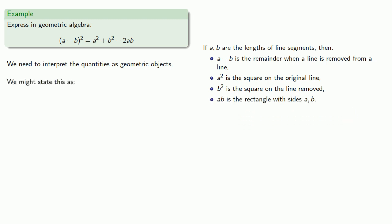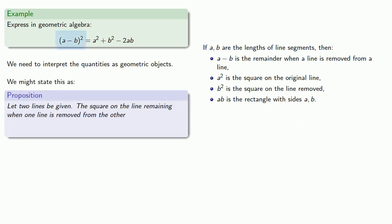And so we might state this as the following: Let two lines A and B be given. The square on the line remaining when one line is removed from the other is equal to the squares on the two lines reduced by twice the rectangle on the two lines. Now, that really is just a translation of this algebraic statement into geometry. The real problem occurs when you try to draw a picture.